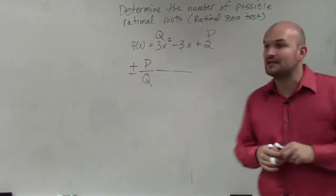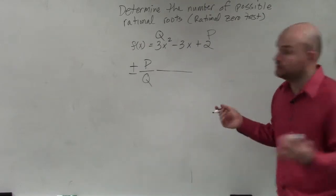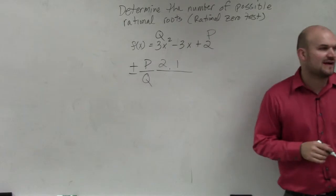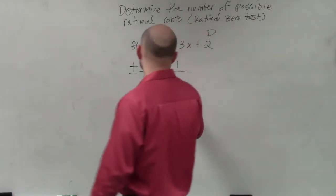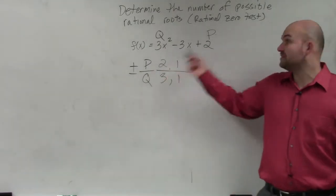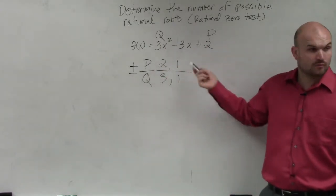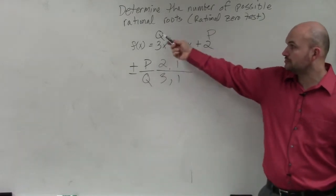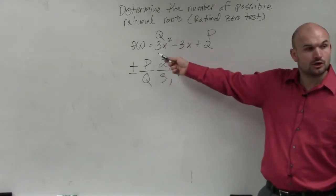So what we're going to do is determine the factors of p. The factors of 2 are 2 and 1. And then we're going to determine the factors of q, which are 3 and 1. So I chose a really basic one for you guys, just to make sure we can get them. The only factors of p, 2, are 2 and 1. P is your constant. q is your leading coefficient.